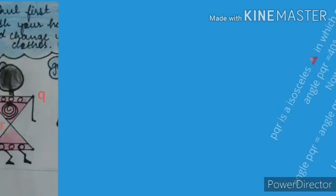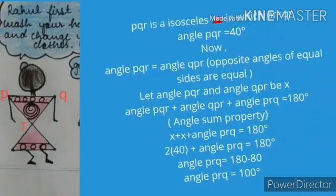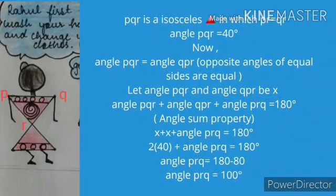PQR is an isosceles triangle in which PR is equal to QR. Angle PQR is 40 degrees. Angle PQR is equal to angle QRP, as the opposite angles of equal sides are equal. By the angle sum property, angle PQR plus angle RPQ plus angle PRQ equals 180 degrees. Putting in the values, we can say that angle PRQ is 100 degrees.